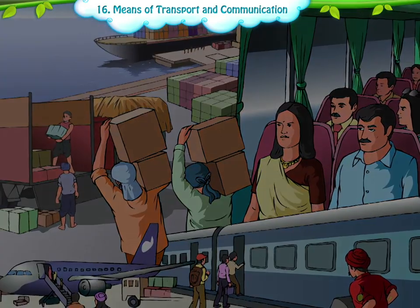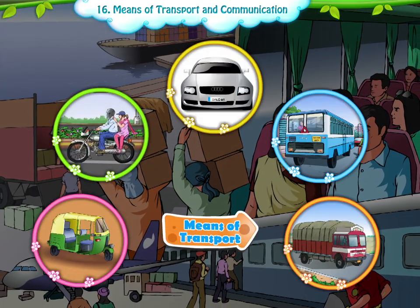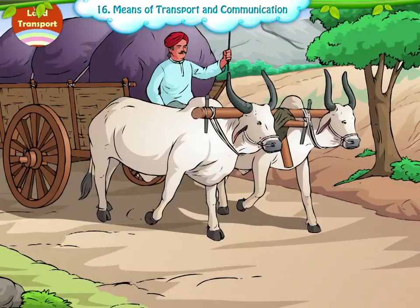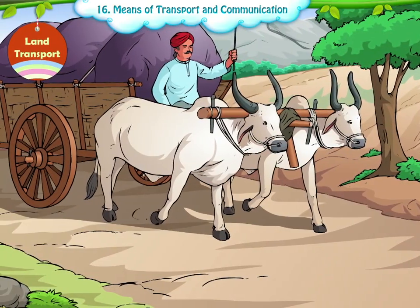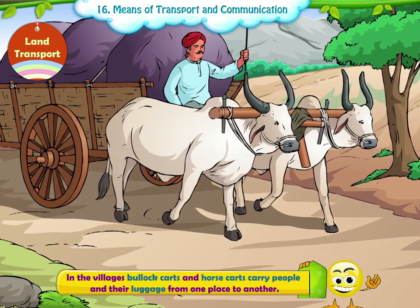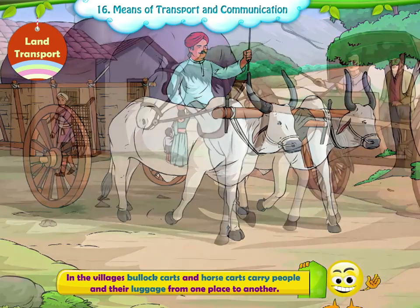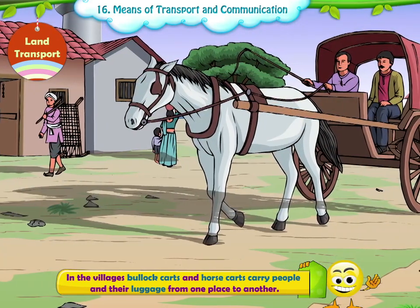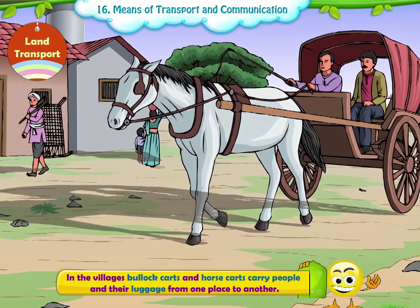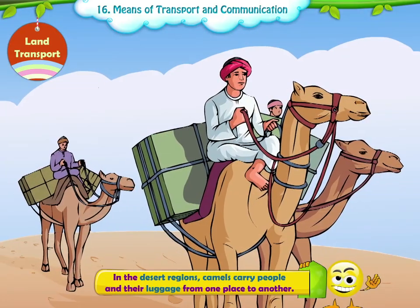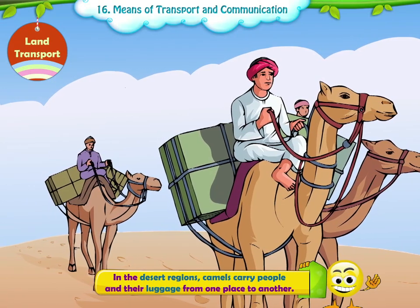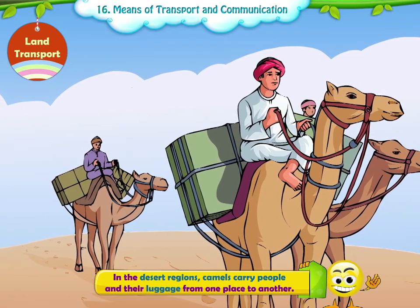Let us share our knowledge about the different means of transport that we use. The first one is land transport. In the villages, bullock carts and horse carts carry people and their luggage from one place to another. In the desert regions, camels carry people and their luggage from one place to another.